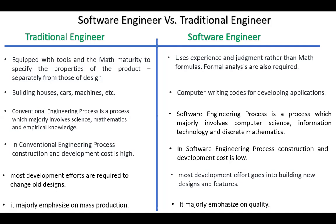Conventional engineering process is a process which is majorly involved in science, mathematics, and empirical knowledge, while software engineering process is a process majorly involved in computer science, information technology, and discrete mathematics. In conventional engineering, construction and development cost is high, while it's usually not high in software engineering. In traditional engineering, most development efforts are required to change all designs, while in software engineering, most development effort goes into building new designs and features.